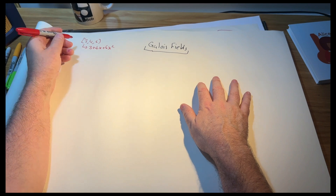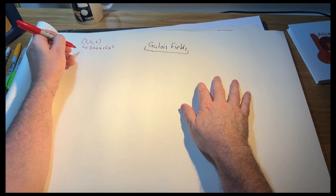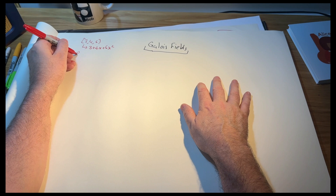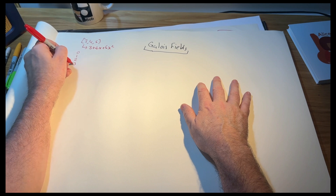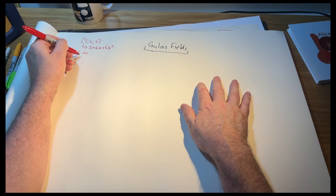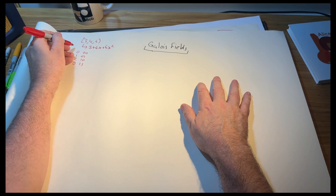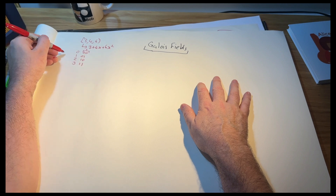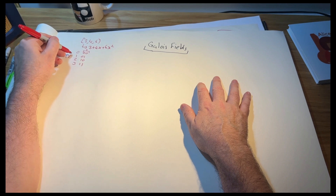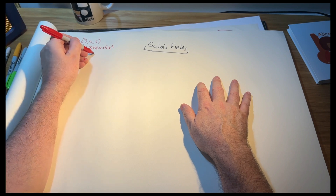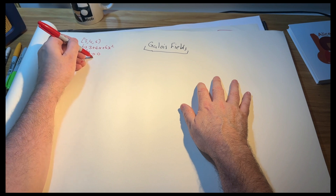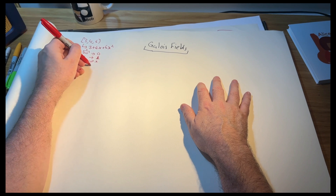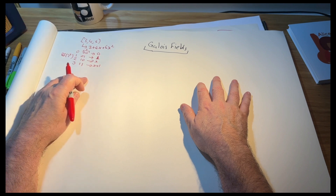We can represent our binary values as a polynomial. For example, if we have zero, one, two, and three, then we have zero, zero zero one, zero zero one one, and one one — this has a degree of two. When we define that as a Galois field of two to the power of two, we have zero, and then x, and then one, and then x plus one.